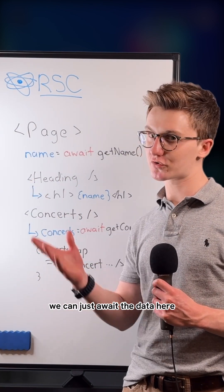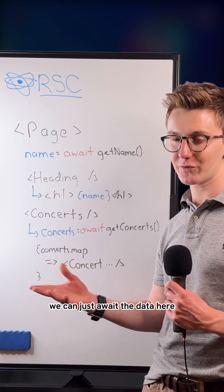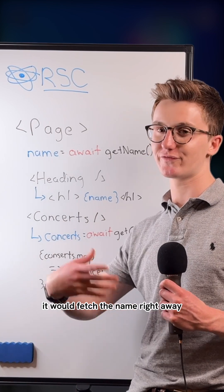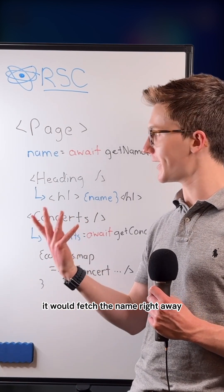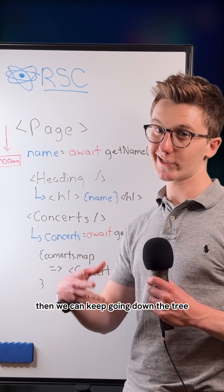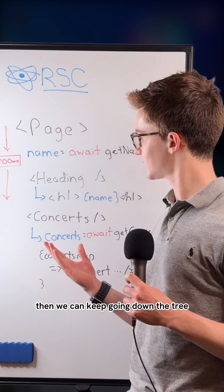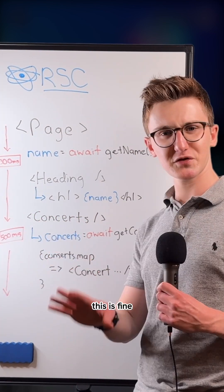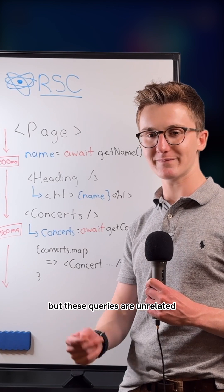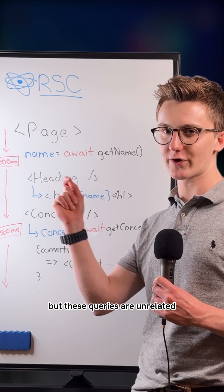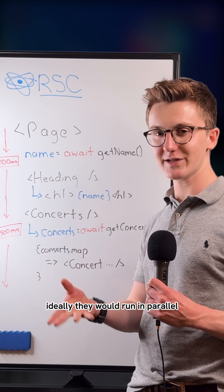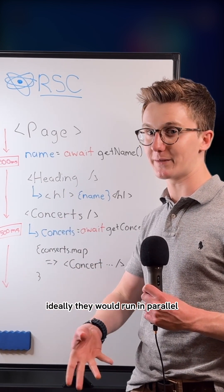We can just await the data. Here it would fetch the name right away, then we can keep going down the tree. This is fine, but these queries are unrelated. Ideally, they would run in parallel.